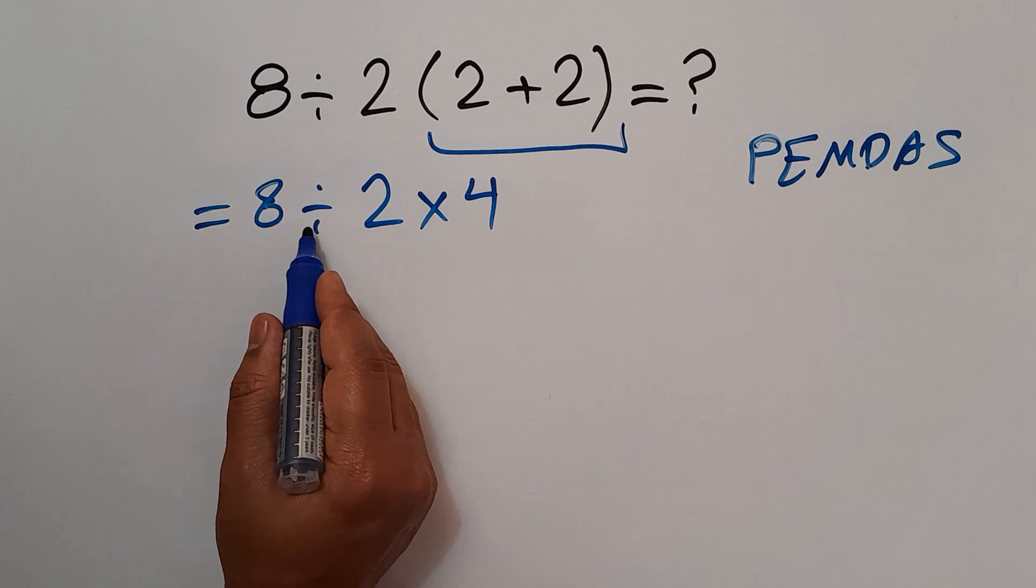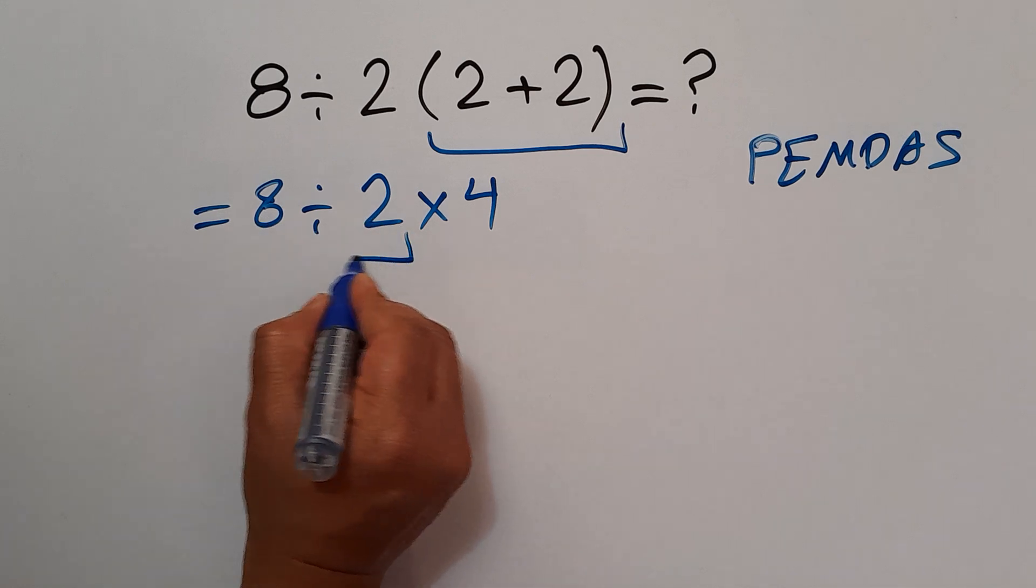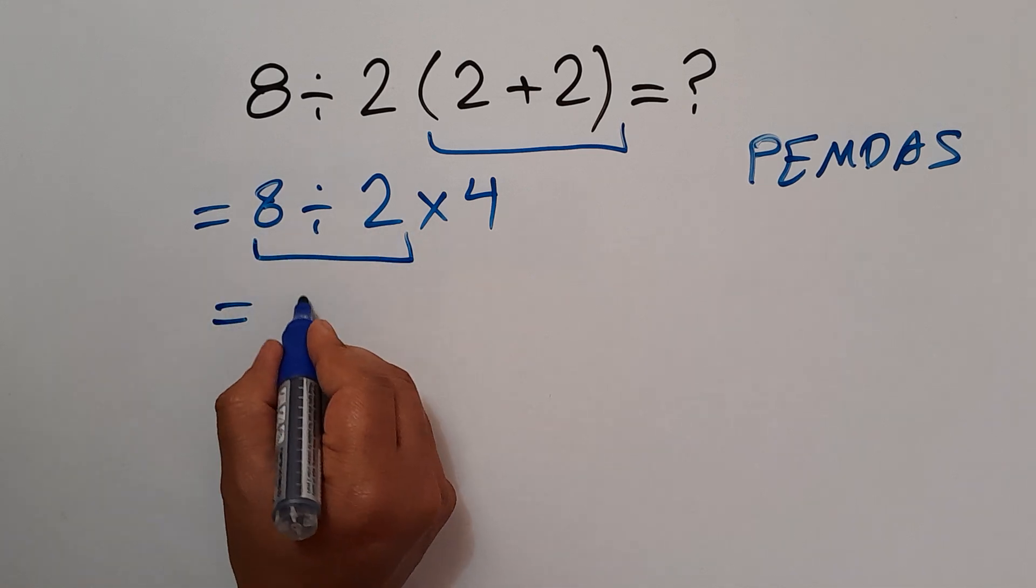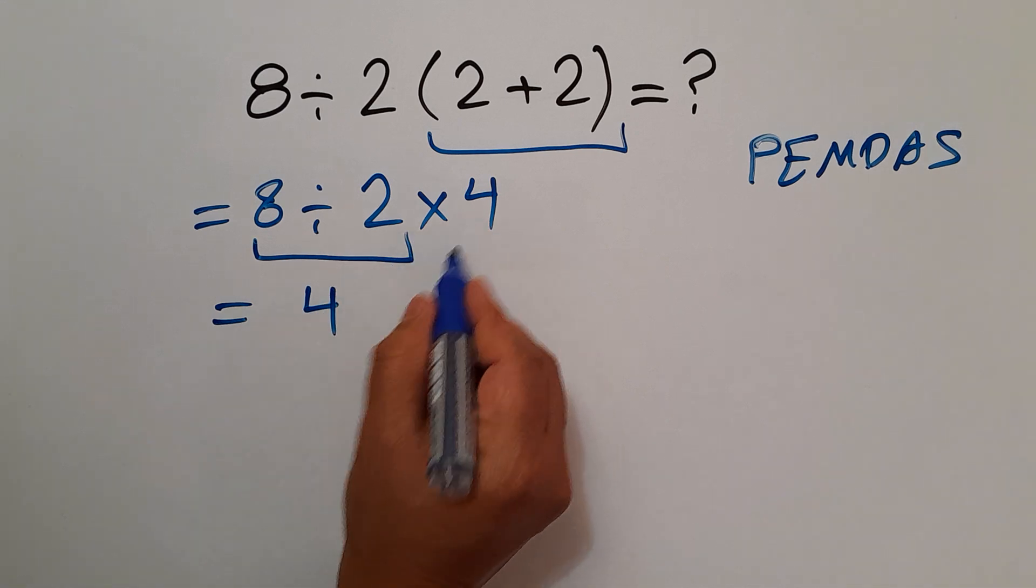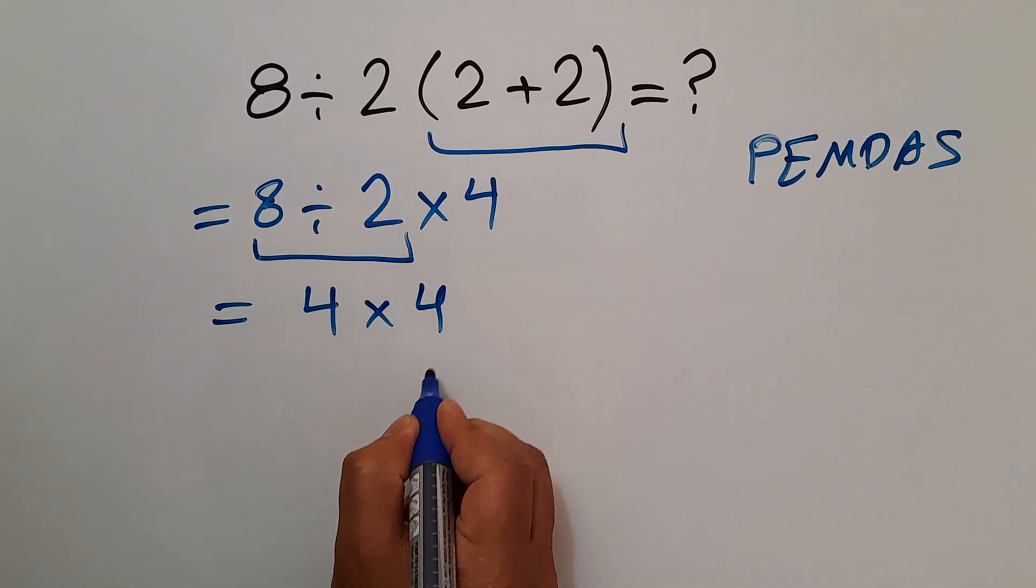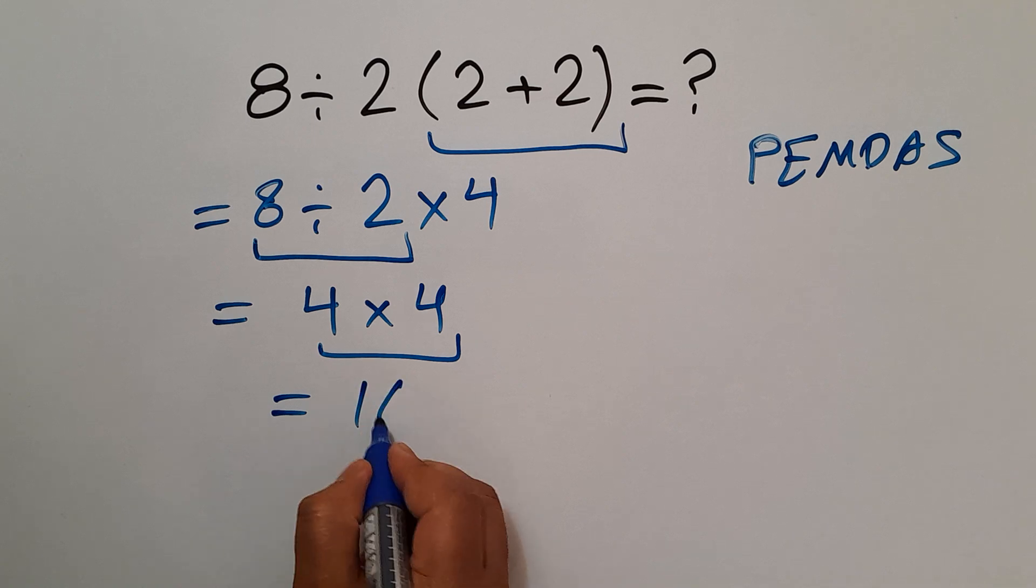So first 8 divided by 2, which equals 4. So 4 times 4, and 4 times 4 is just 16.